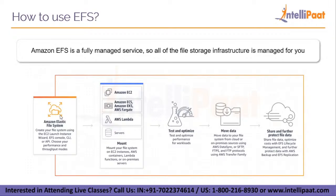After optimizing your whole infrastructure, the next stage is moving in your initial data. You move your data to your file system from cloud or on-premises, and you can do that using AWS DataSync or various protocols using the AWS Transfer Family. AWS Transfer Family is a feature provided by AWS that helps you transfer all your files smoothly. The last step is to share and further protect your data, and optimize your cost with EFS lifecycle management.